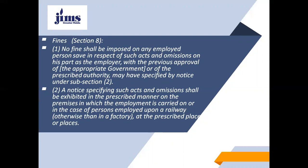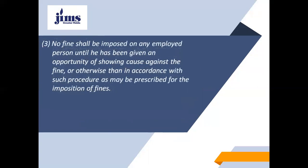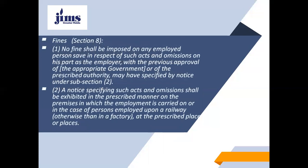So there has to be a notice which will specify the acts and omissions, and that shall be exhibited in the prescribed manner on the premises where the employment is carried on, or in the case of a person employed on a railway or otherwise than in a factory, then at the prescribed place or places where that notice should be exhibited.